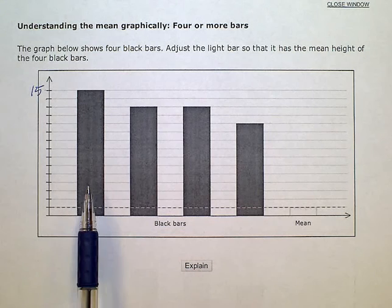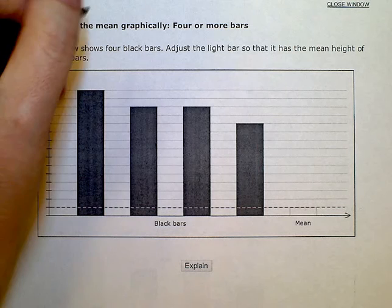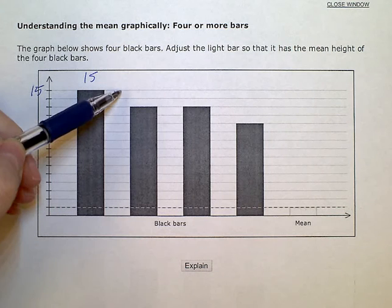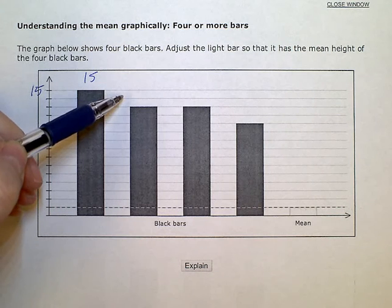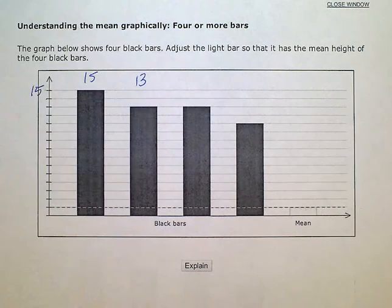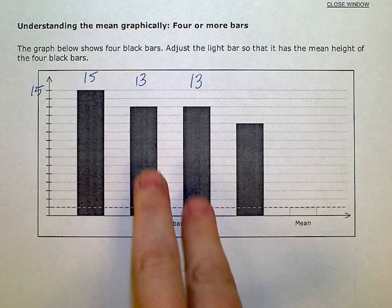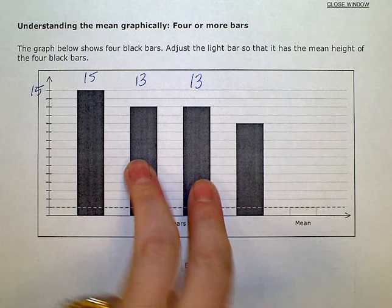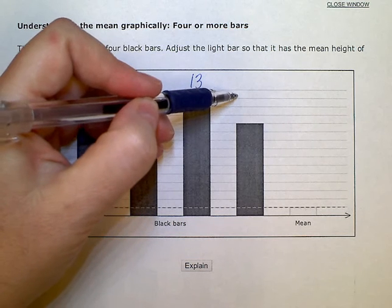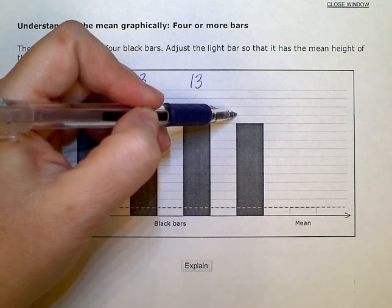So this bar represents 15. If we count down: 15, 14, 13 — this one represents 13. This one also represents 13; those two are the same height. And this one represents 15, 14, 13, 12, 11.